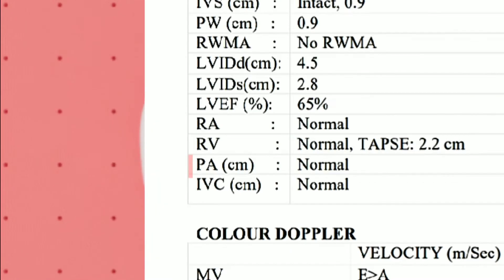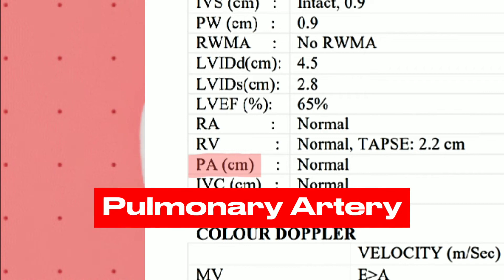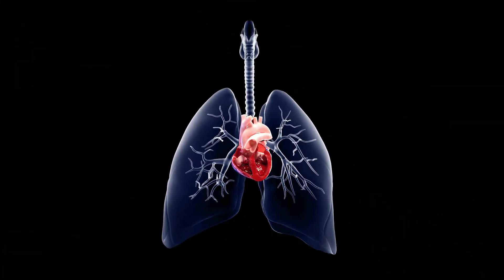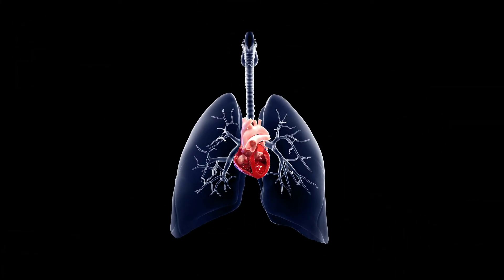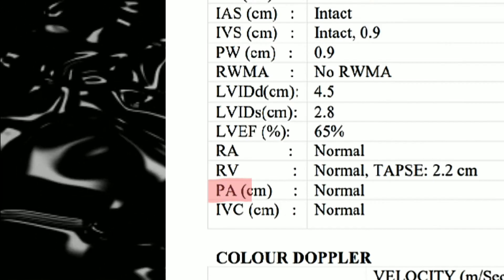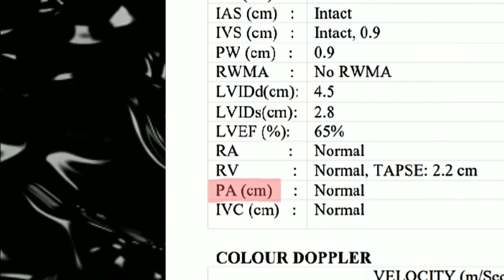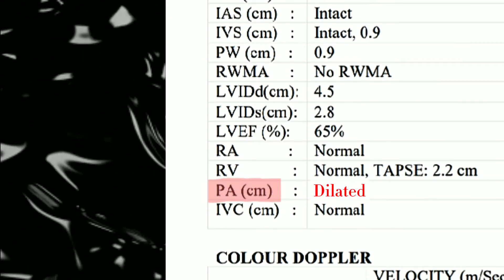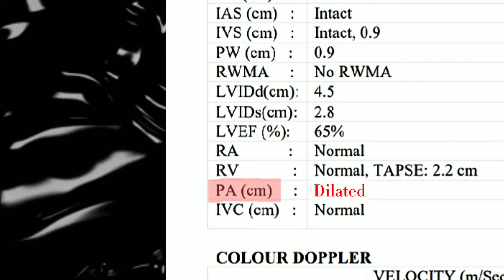Next is PA, which means pulmonary artery. The pulmonary artery carries blood from the heart to the lungs. The normal diameter of the pulmonary artery is between 22 to 28 mm. An increase in the size of the pulmonary artery is considered a dilated pulmonary artery.